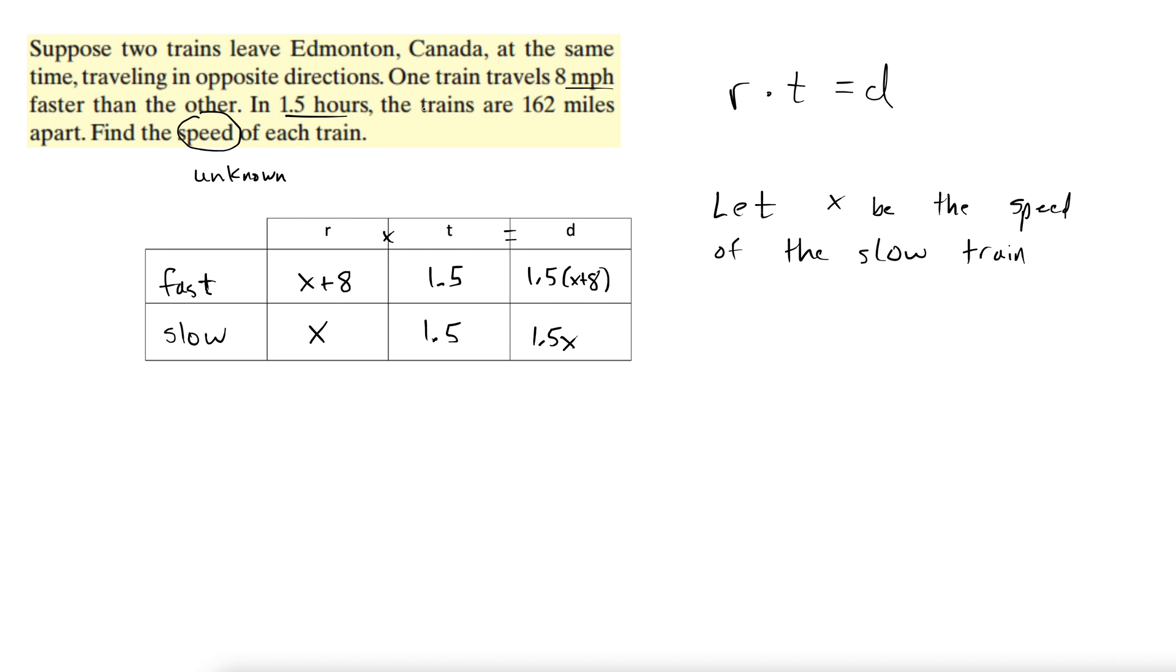They're traveling in opposite directions, and after 1.5 hours, the total distance between them is 162 miles total. That's the total distance. Apart means the total distance between them. So we need to add both these distances together, and when we do that, we'll get 162, and that is the equation we need from this table.